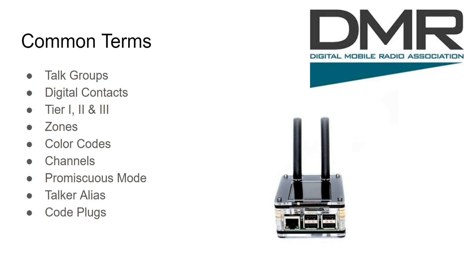Talker alias is a feature you're seeing more and more — Brandmeister, DMR, and PiStar take advantage of it. It's information associated to the digital signal that typically includes your call sign. In older DMR systems or cheaper radios, when someone is talking you only see their DMR ID, which is just a string of numbers. With talker alias, you can see their call sign and put an identity to the voice you're hearing.